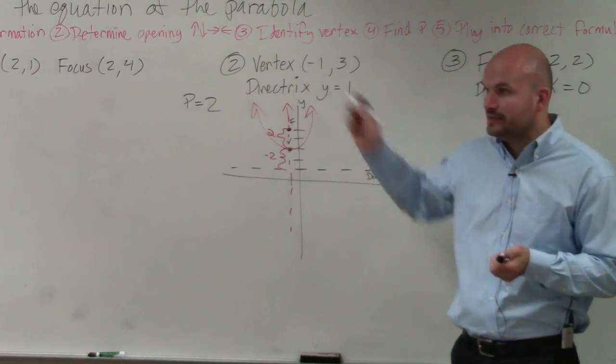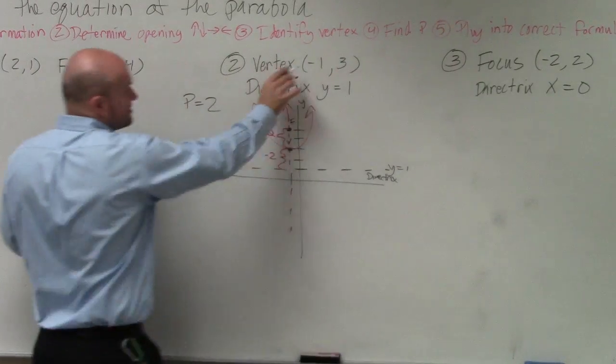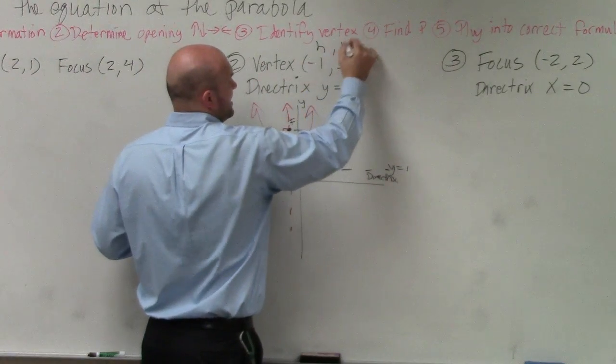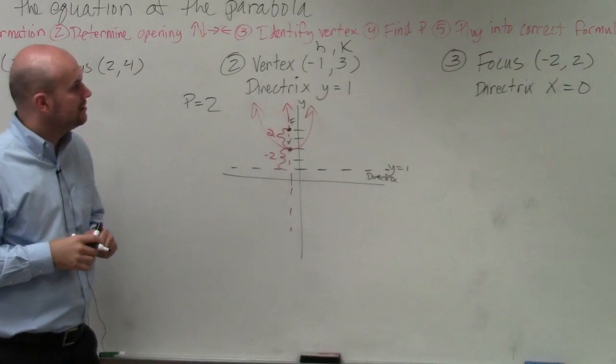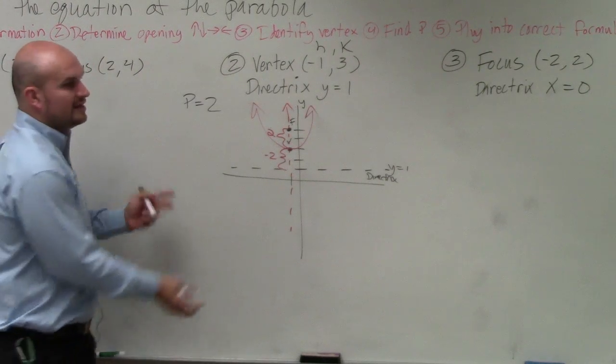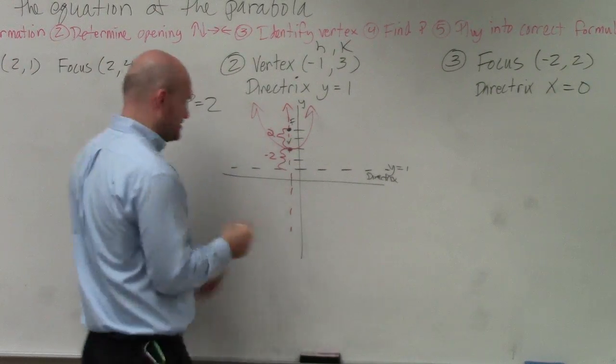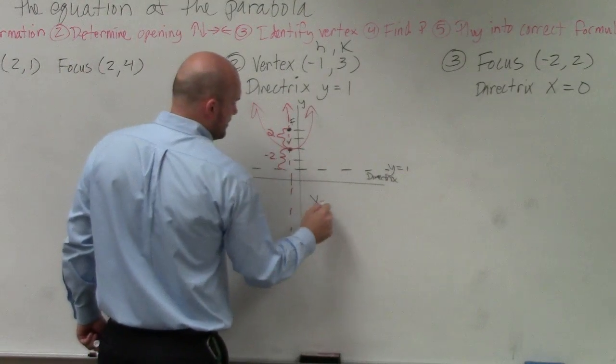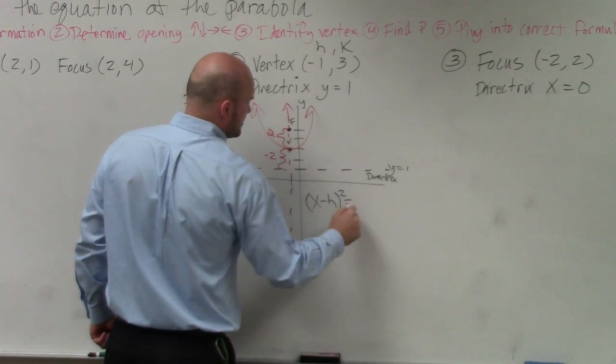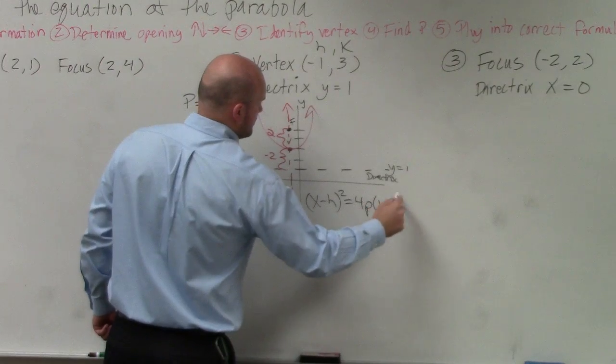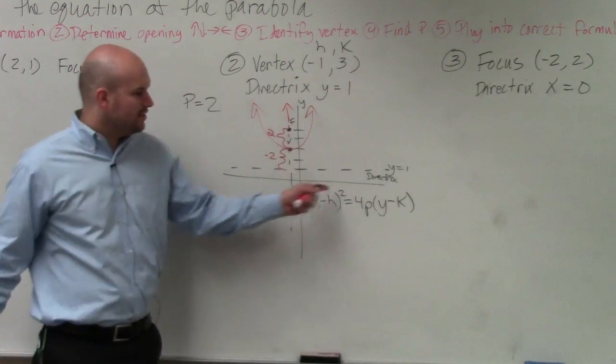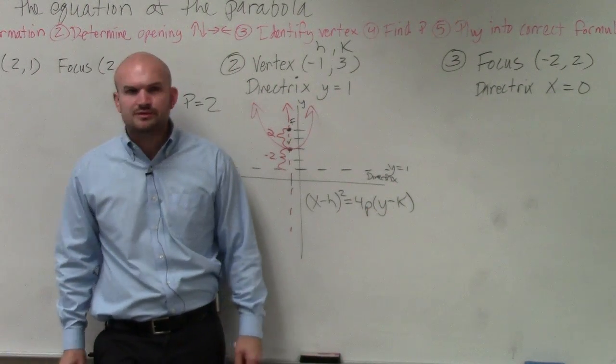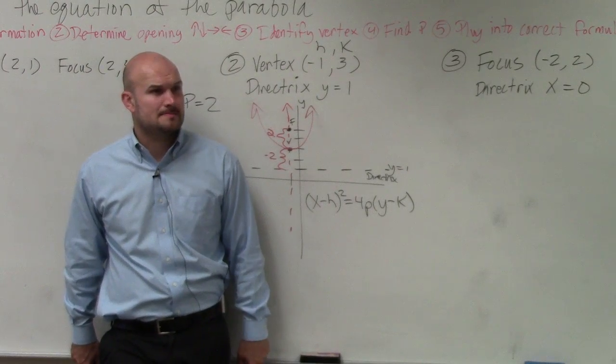Now that I know that p equals 2, the vertex, we already know that's h and that's k. So that's good, right? So we already have h and k. We have p. Since it opens up or down, I have two equations. Well, the equation that I want to use, does anybody know why I want to use this equation and not the other equation? Anybody want to give a shot? Yes?